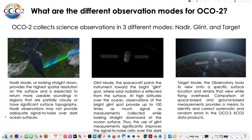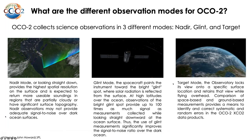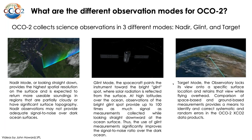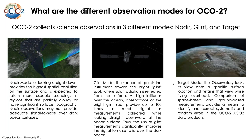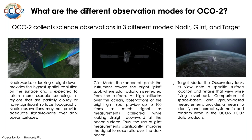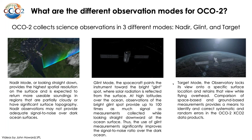This animation shows OCO-2 measuring over the glint spot. At high latitudes over the ocean, glint observations provide up to 100 times as much signal as measurements collected while looking straight down, so the use of glint observations significantly improves the signal-to-noise over ocean. We also have a third mode — target mode — where we lock the view onto a specific surface location, as shown in this animation over a specific place in the US. We do this so we can target specific ground-based sites where we have measurements for validation, providing a means to identify and correct systematic and random errors in OCO-2 data products.